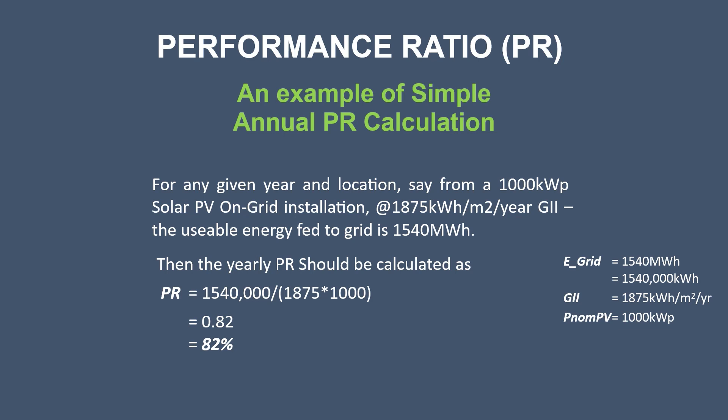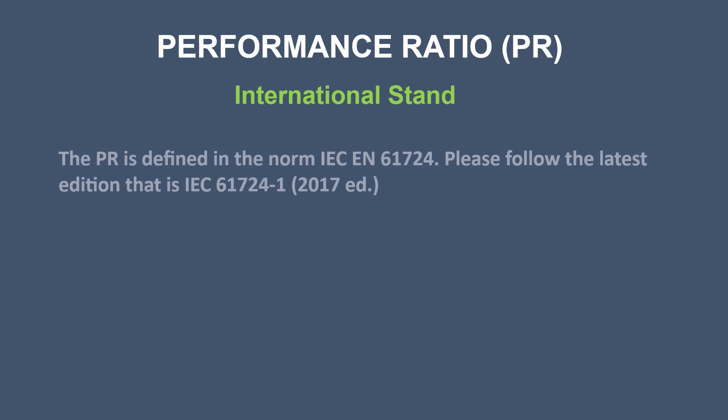Please see our other video on how to calculate PR in MS Excel for more detailed understanding. The solar plant performance ratio is defined in the norm IEC 61724. Please follow the latest edition, that is IEC 61724, Part 1, 2017 edition. The link to get the standard from the IEC web store is in the description below.